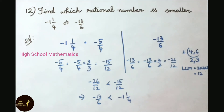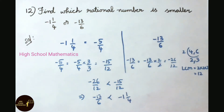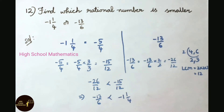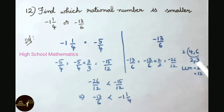Question number 12: Find which rational number is smaller, minus 1 and 1/4 or minus 13 by 6. The given rational numbers have different denominators, so we need to find the LCM. LCM of 4 and 6: 2 twos are 4, 2 threes are 6. LCM equals 2 into 2 into 3, which equals 12.